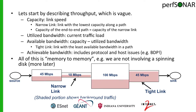If we were going to perform a bandwidth measurement end-to-end, we would be restricted by that tight link. This is what BWCTL is really meant to measure — the achievable bandwidth — which is the highest amount of bandwidth you can achieve at the point you run the test. This includes protocol and host issues as well as tunings. Running BWCTL end-to-end, we're first restricted by the narrowest link at 10 megabits, but further restricted by the tightest link — the 45 megabit per second link that's more than 90% full.